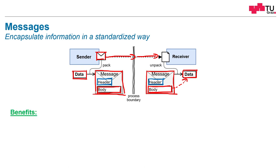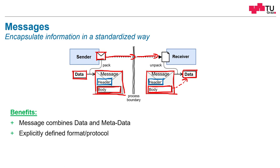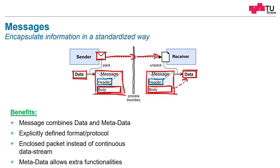What are the benefits? A message combines normal usage data and metadata. It has an explicitly defined format and protocol — how to read it, how to write it, how to interpret it. And it's an enclosed packet instead of a continuous data stream sent over the network; it's a separate unit of work which can be stored, buffered, and so on.